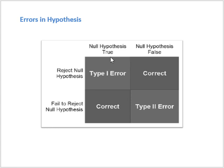Type 1 error: the null hypothesis is actually true, but we reject it — we should have accepted it but we reject it. This kind of error is called Type 1 error: when the null hypothesis is true and we reject it. Type 2 error is the opposite: the null hypothesis is false, but we fail to reject it — meaning we accept the null hypothesis even though it is false. So, null hypothesis is false and we accept it is called Type 2 error, and null hypothesis is true and we reject it is called Type 1 error.